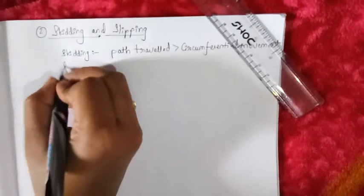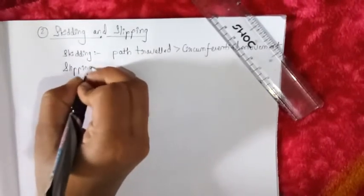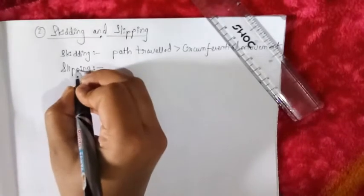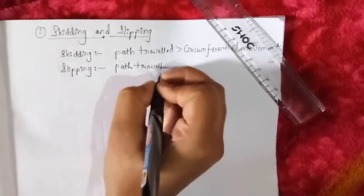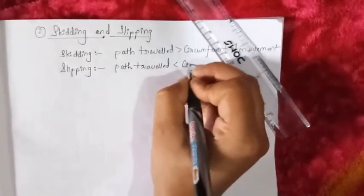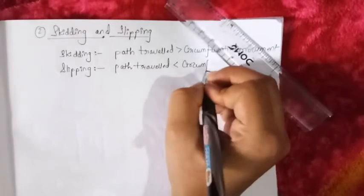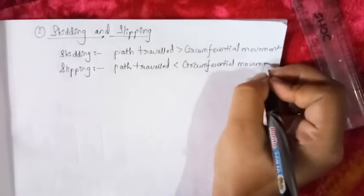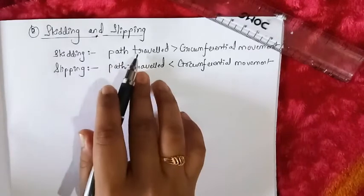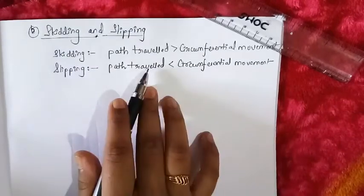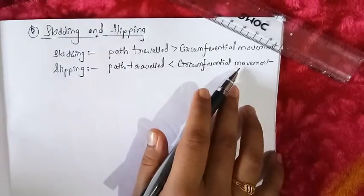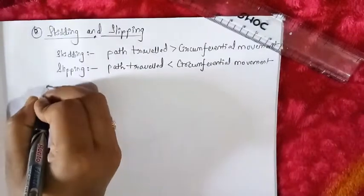Slipping is the opposite of skidding. Slipping occurs when the path travelled by the wheel is less than the circumferential movement. So to summarize: when the path travelled is greater than the circumferential movement it is skidding, and when the path travelled is lesser than the circumferential movement it is slipping.